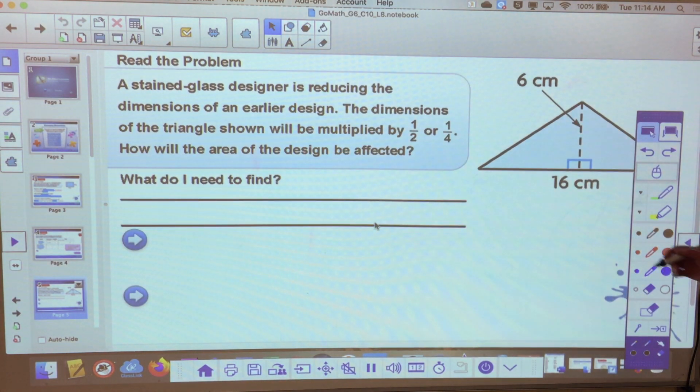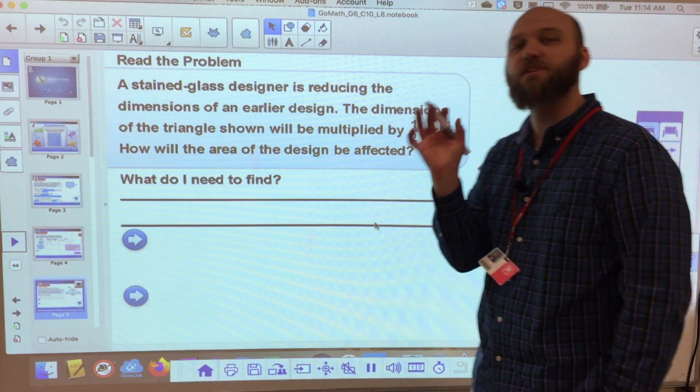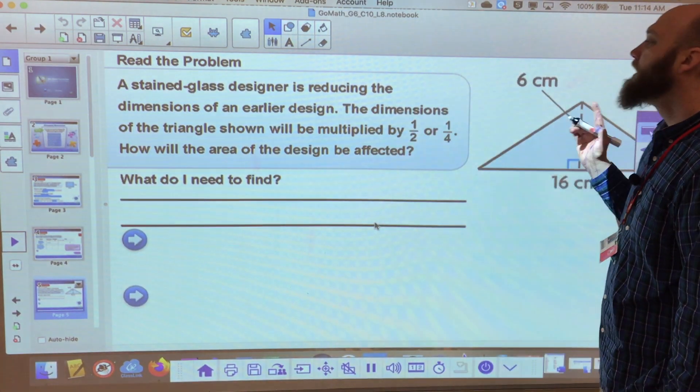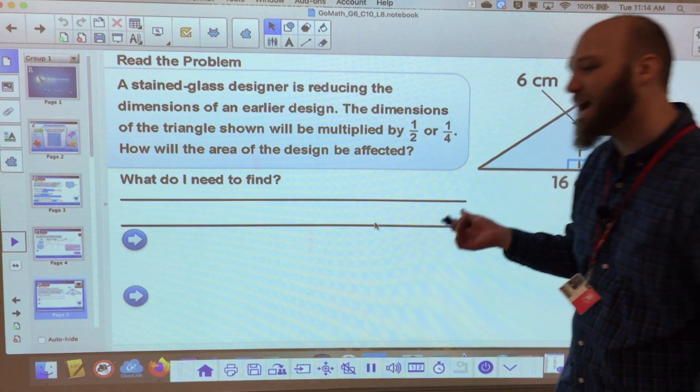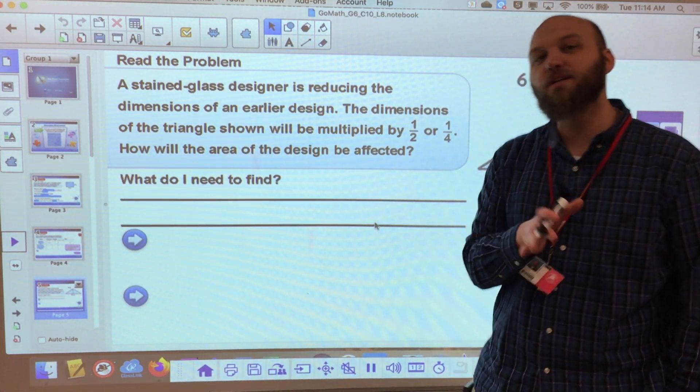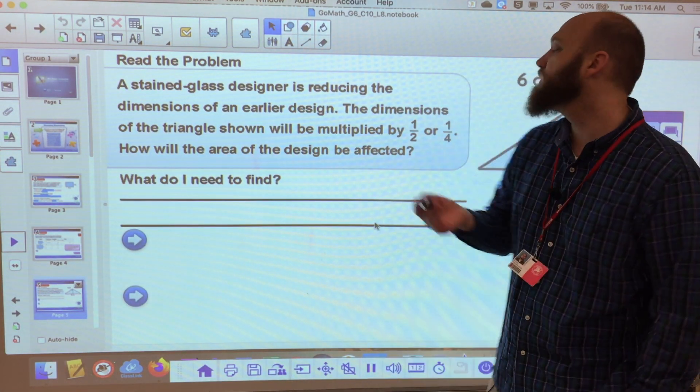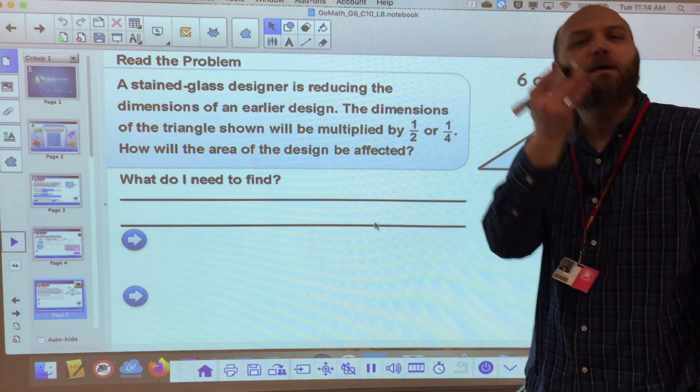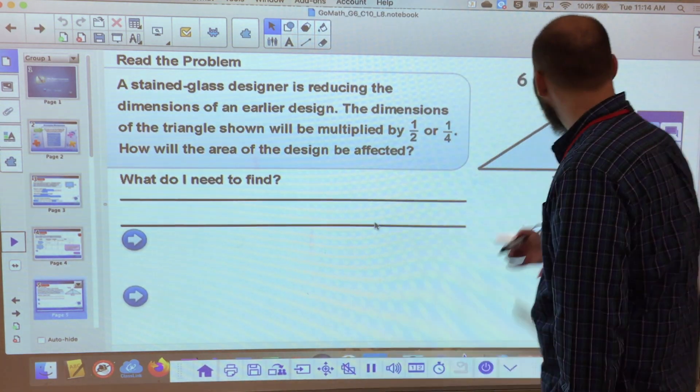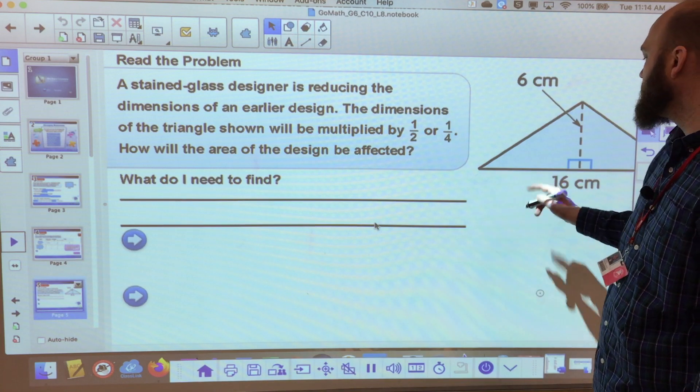So I'm going to do one more for you here. A stained glass designer is reducing the dimensions. So now we're going the other way. The dimensions of the triangle shown will be multiplied by one half or one fourth. Yes, you can divide by two or divide by four. They're just multiplying in fractions. We can do that because we've been doing that since unit two.